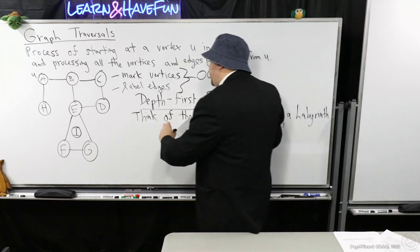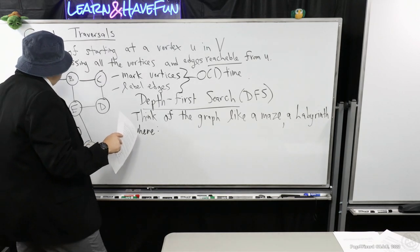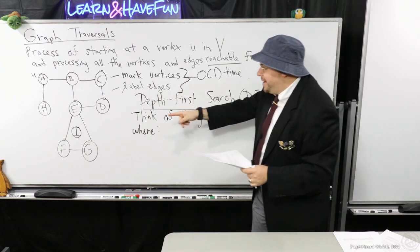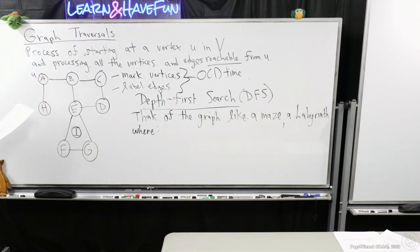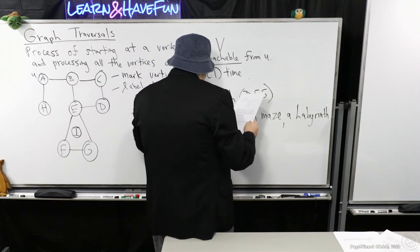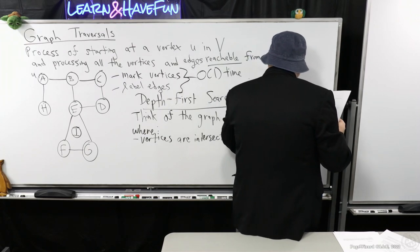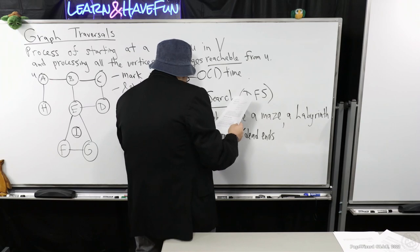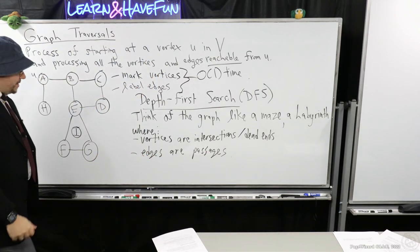I want to imagine that these vertices each end up being like an intersection or a dead end, and you can think of the edges as corridors. So imagine a big maze where the vertices are the intersections or dead ends, and the edges are just the corridors.